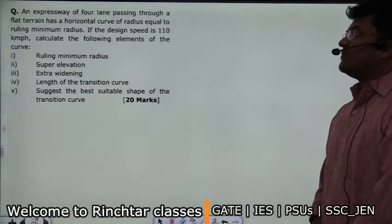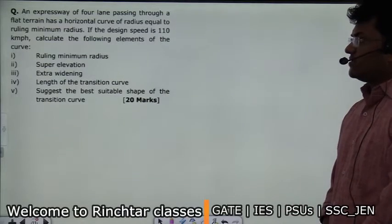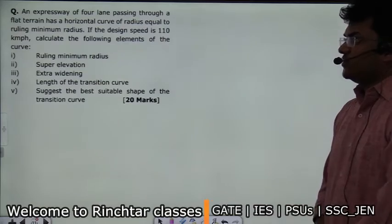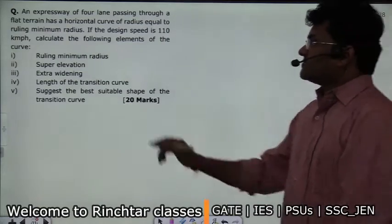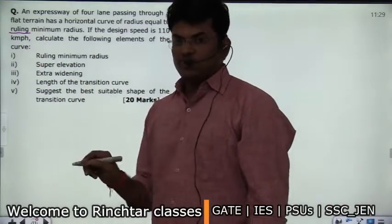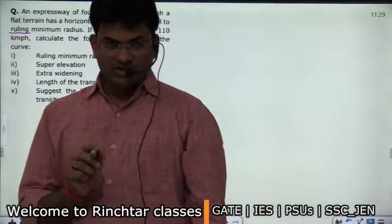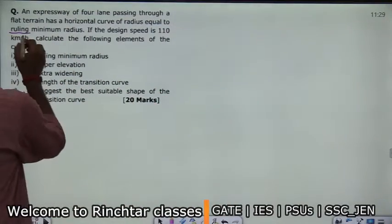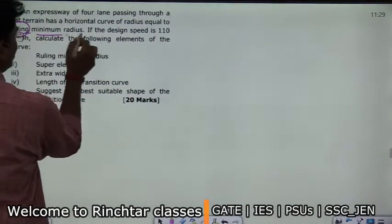An expressway of four lanes passing through flat terrain has a horizontal curve of radius equal to the ruling minimum radius. 'Ruling' means design — so we need to find the minimum radius corresponding to the design speed.